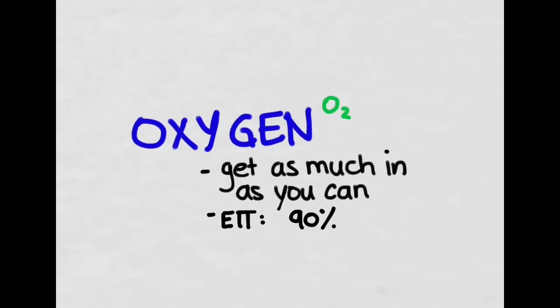So now let's look at each one of these in turn. We first talked about oxygen. At first, get as much as you can in, but if you get to being intubated, get about a pulse ox of 90%. That's where we want to get to.